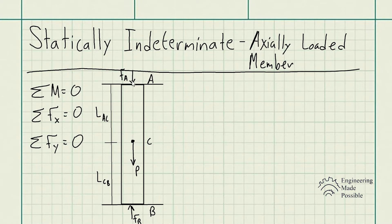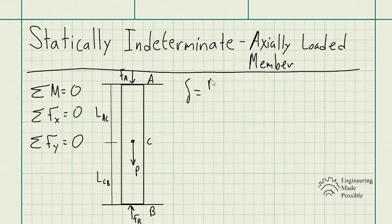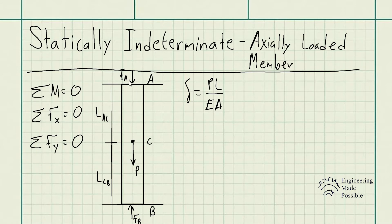If you were to do the sum of moments with respect to any of these points, you wouldn't be able to get any further information and therefore couldn't solve for the unknowns. However, in strengths of materials we have learned an additional relationship — the deformation, which equals the external load times the length divided by the modulus of elasticity times the cross-sectional area. This is why the problem is considered statically indeterminate.